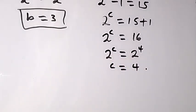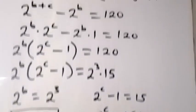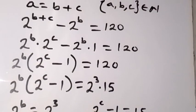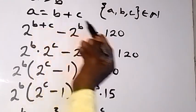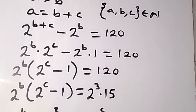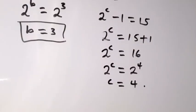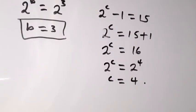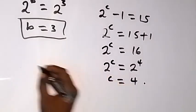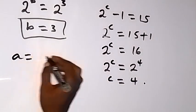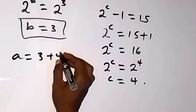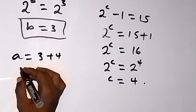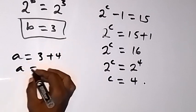Don't forget that a equals b plus c. Since we have b equals 3 and c equals 4, a will then be equal to 3 plus 4, therefore a equals 7.